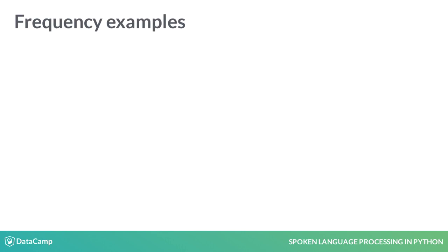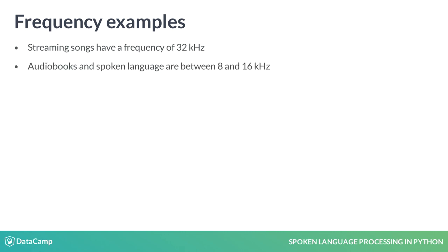For example, a song you stream will usually have a 32 kilohertz sampling rate. This means 32,000 pieces of information per second. Speech and audiobooks are usually between 8 and 16 kilohertz. We'll look at some of these later.